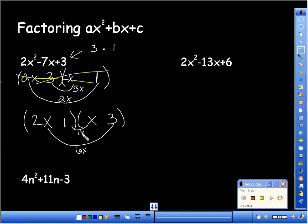So what do my signs have to be on 1 and 6? They both have to be negatives. So that's going to be minus and minus, because the negative and a negative will make the positive 3. So my answer is 2x minus 1 times x minus 3.